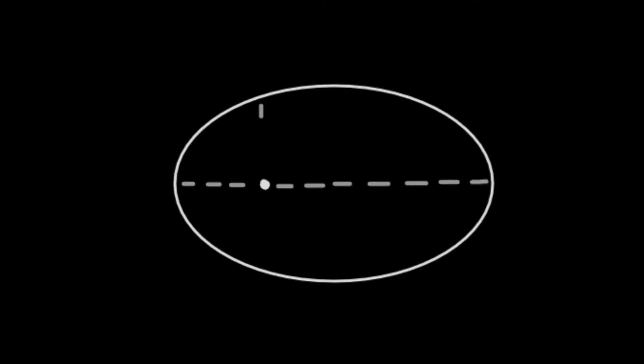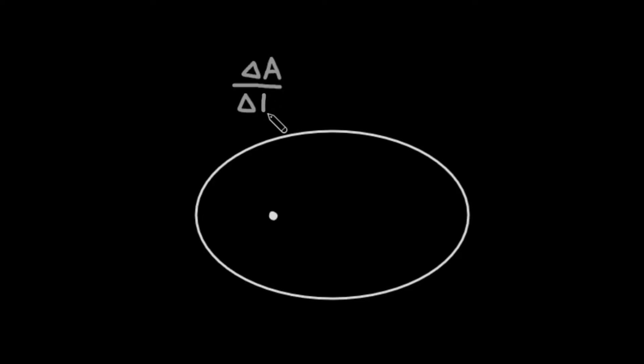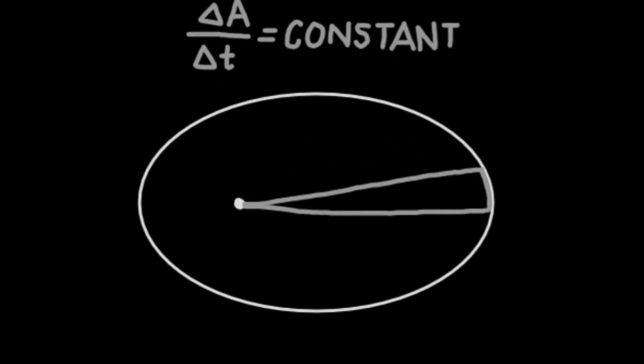Another way to think of Kepler's law is that the change in the encompassed area must remain constant over time. How do we prove this? Let's zoom in into a section of the ellipse to see.